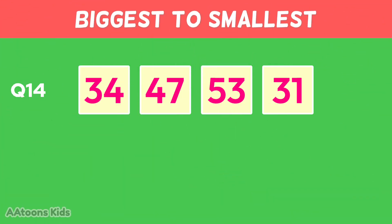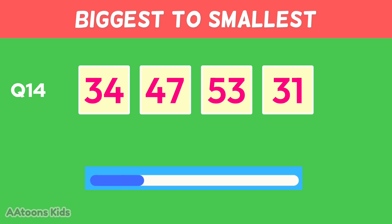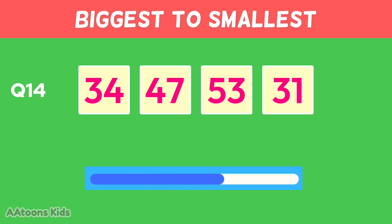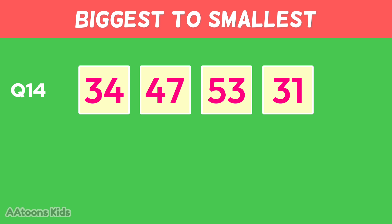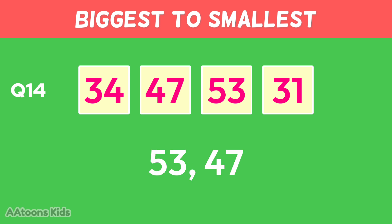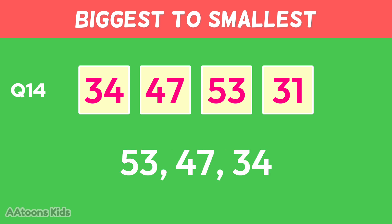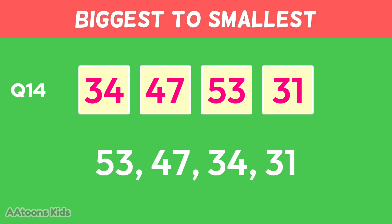Arrange these numbers from biggest to smallest: fifty-three, forty-seven, thirty-four, thirty-one.